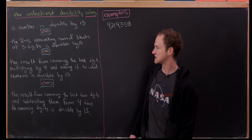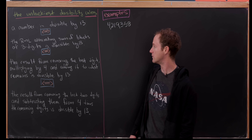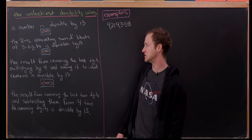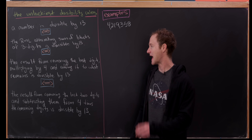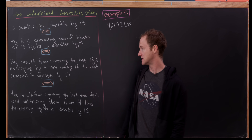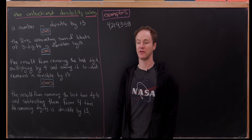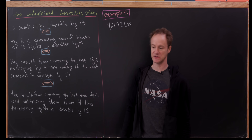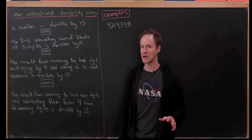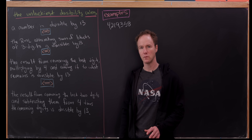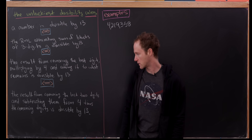Next up, we have the result made from removing the last digit, multiplying it by four, and then adding it to whatever remains — that result has to be divisible by 13, and then the original number is divisible by 13. That one seems kind of crazy, but we'll see how it works and why it works.